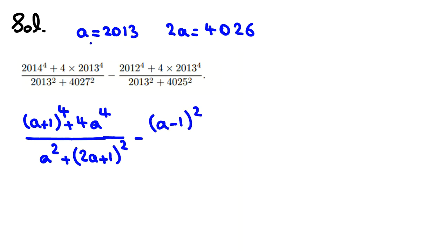Why do I set A = 2013? Because I saw that here we have 2013, and terms that are one less (2012) and one more (2014). So we can write A + 1, A − 1, and A, and express everything in terms of A. Again, we have 2013 and 2013.